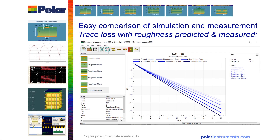This comparison of simulated and measured insertion loss on a range of different copper roughnesses on transmission lines uses the preview version of the new Polar LA9000 S-parameter analysis tool.